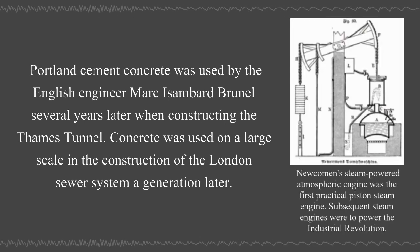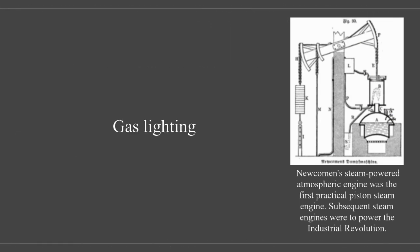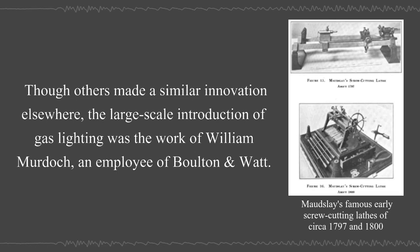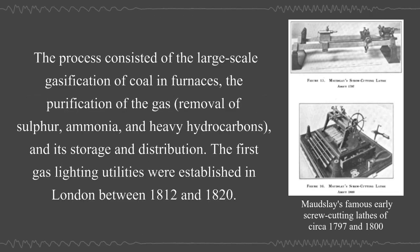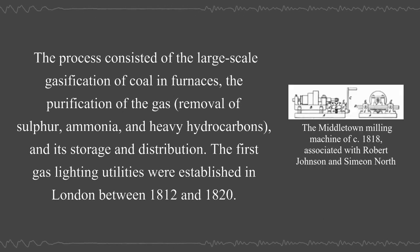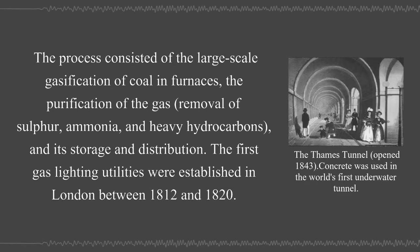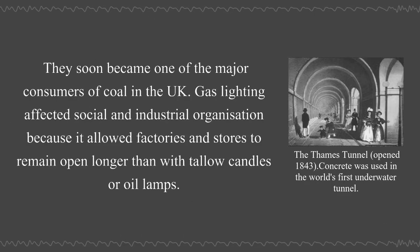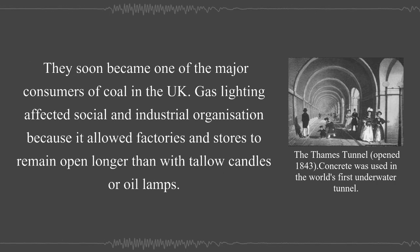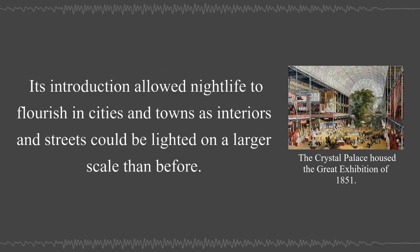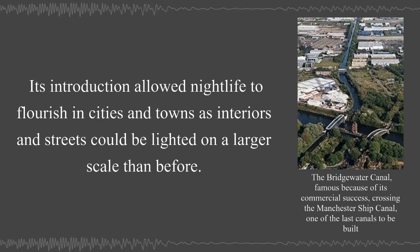The large-scale introduction of gas lighting was the work of William Murdoch, an employee of Bolton Watt. The process consisted of the large-scale gasification of coal in furnaces, the purification of the gas by removal of sulfur, ammonia, and heavy hydrocarbons, and its storage and distribution. The first gas lighting utilities were established in London between 1812 and 1820 and soon became one of the major consumers of coal in the UK. Gas lighting affected social and industrial organization because it allowed factories and stores to remain open longer than with tallow candles or oil lamps, and allowed nightlife to flourish in cities and towns.